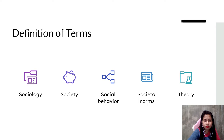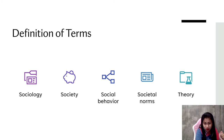Our next term is theory. When we say theory, this is a statement or an approach that attempts to explain why certain things are the way they are. For this lesson, this shall cover the explanations focused on society — theories focused on society and the interaction processes taking place therein.